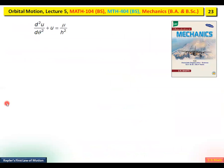This differential equation can be written in the form: d²u/dθ² + u = μ/h², where we have taken μ as a constant equal to G·M, so that the calculation becomes a little easier.